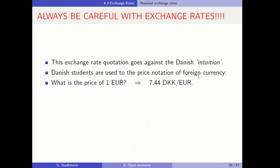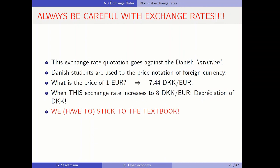Always be careful with exchange rates. This exchange rate quotation used in the textbook goes against the Danish intuition, because Danish students are used to the price notation of foreign currency. Danish students are used to thinking: how much is 1 euro? The answer will be 7.44 Danish krona per euro. When this exchange rate increases to 8 Danish krona per euro, it's a depreciation of the Danish krona. But we have to stick to the textbook.